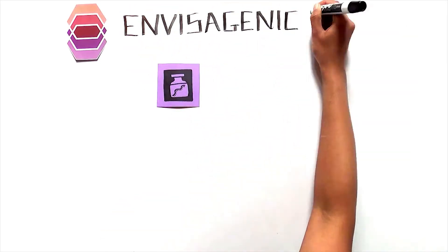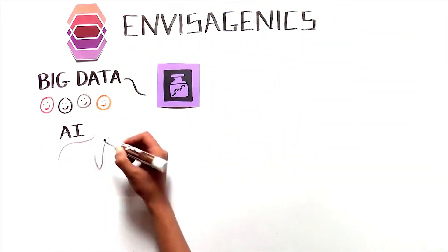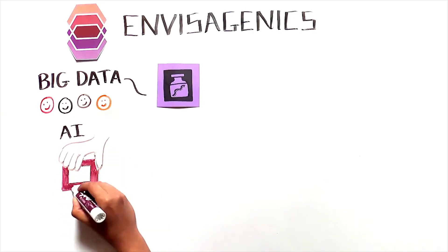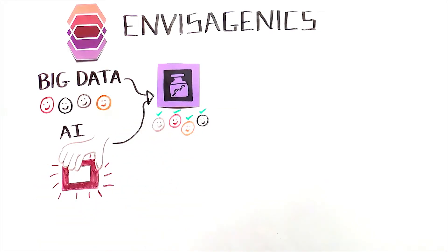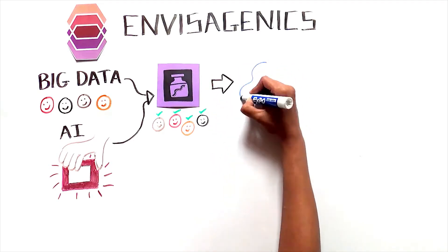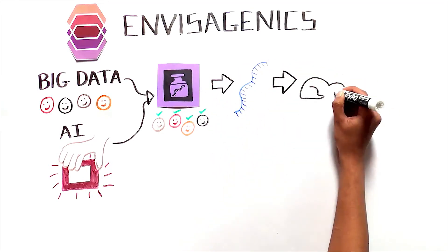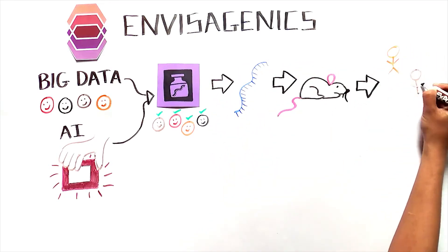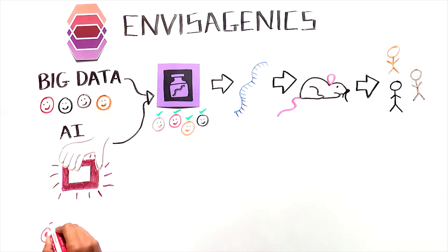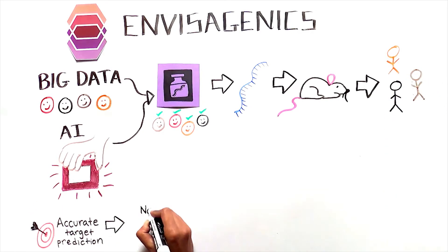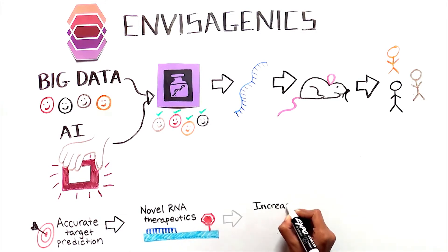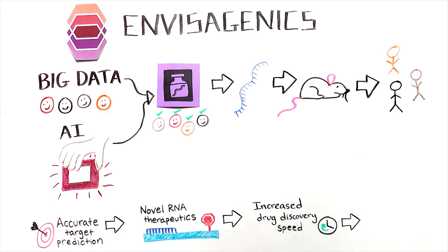With SpliceCore, we combine big data and artificial intelligence to discover splicing errors reproducible across thousands of patients, and use our proprietary algorithms and years of expertise to design and develop new RNA therapeutics, that will be validated in preclinical and clinical studies. By accurately predicting drug targets for RNA splicing diseases, we can develop novel therapeutics, reduce the amount of time it takes to go from drug discovery to patient therapeutics, and save millions of lives.